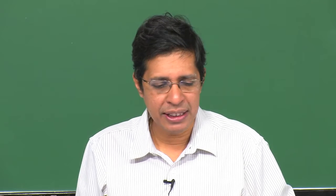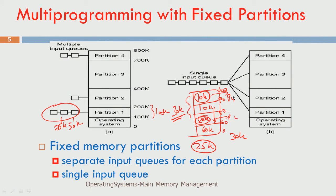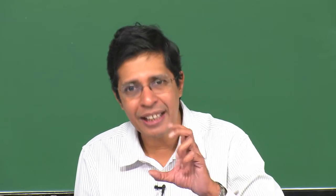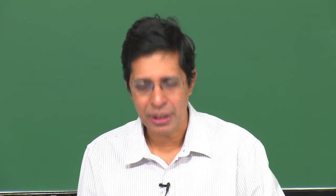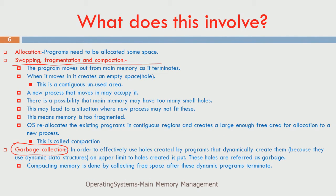This notion of fragmentation and compaction — also called garbage collection — is very important from a memory management perspective. The three key operations are: allocation (which process goes to which partition), swapping (moving processes in and out when memory is insufficient), and handling fragmentation through compaction. When reclaiming memory, there are also security-related decisions, all of which we have summarized so far.